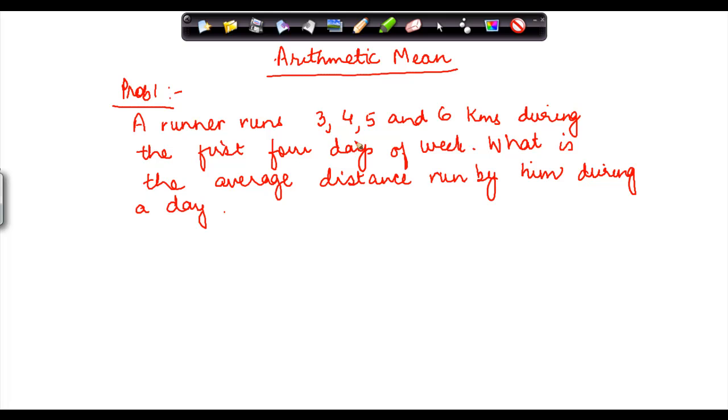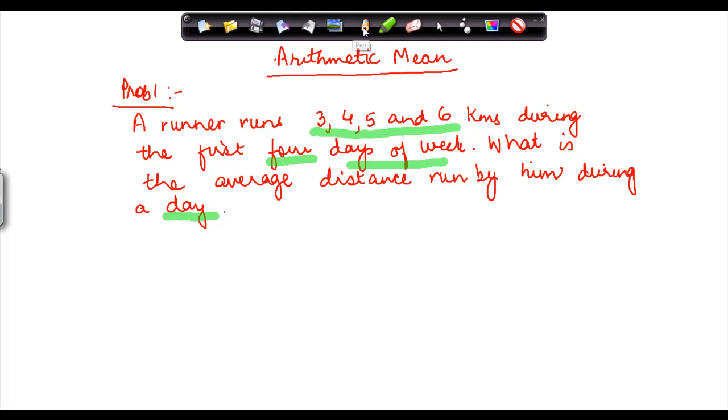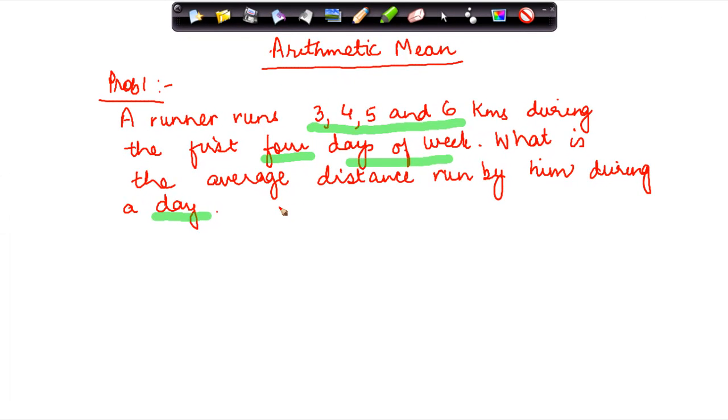So what I am asking you is that there is a runner who runs 3, 4, 5, and 6 kilometers during the first four days of the week. What is the average distance run by him during a day? It is important to note what I am asking here is what is the average distance that he has run during the day. So I am asking you to calculate the arithmetic mean.